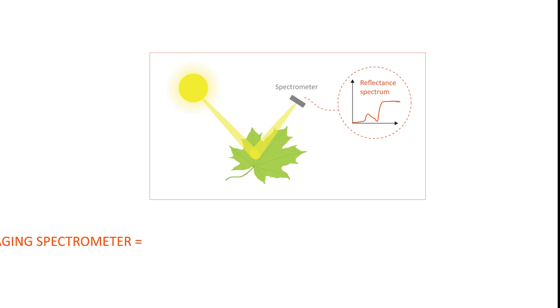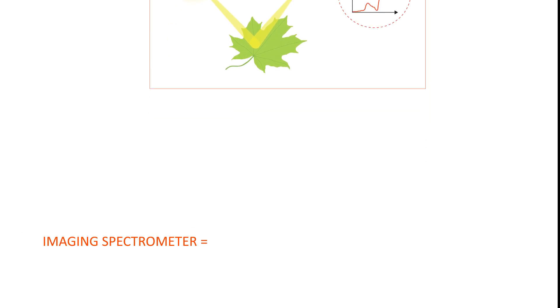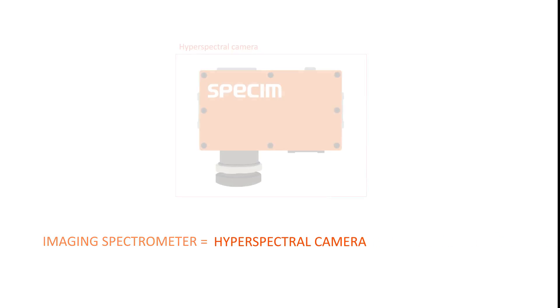Hyperspectral imaging uses an imaging spectrometer to collect spectral information. This device is also called a hyperspectral camera.